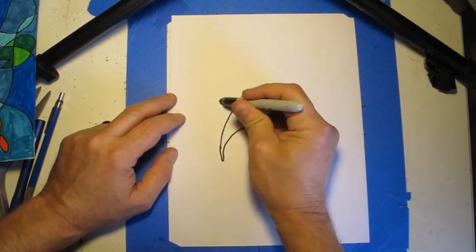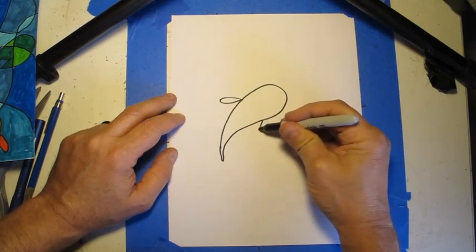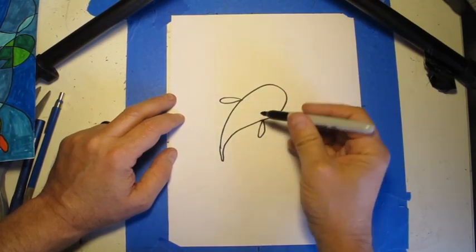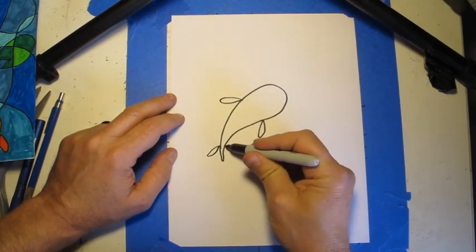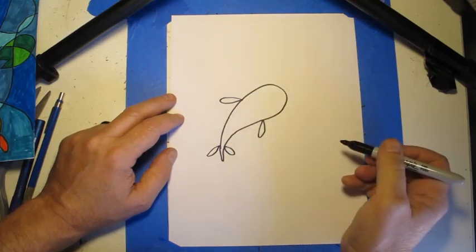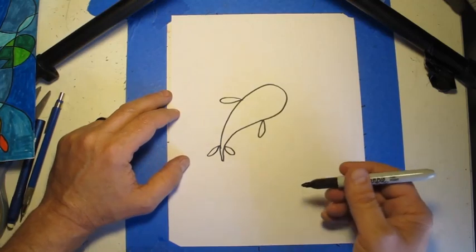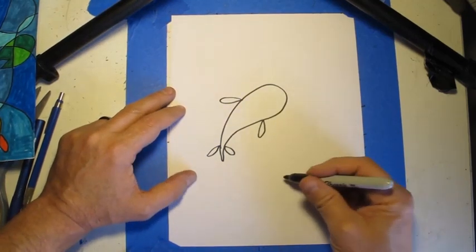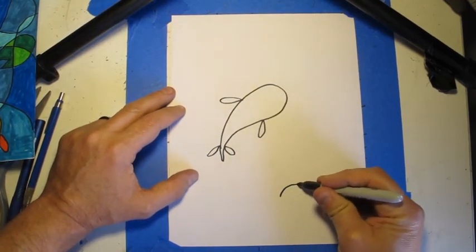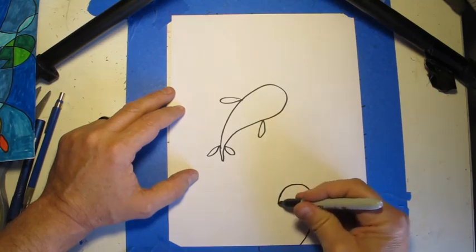And then we're going to add some teardrop shapes up here and back here to give it fins. These are abstract fish so they don't have to look realistic. But I'll put another one over here. I want to see at least three fish in your design.